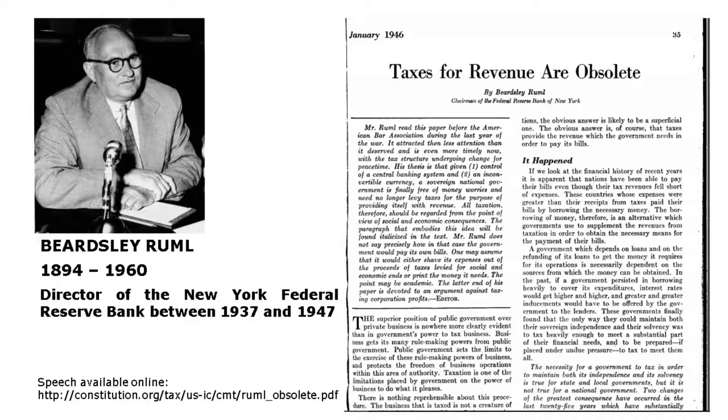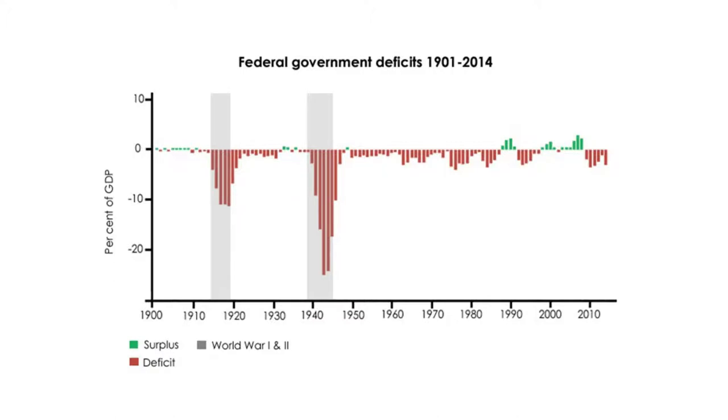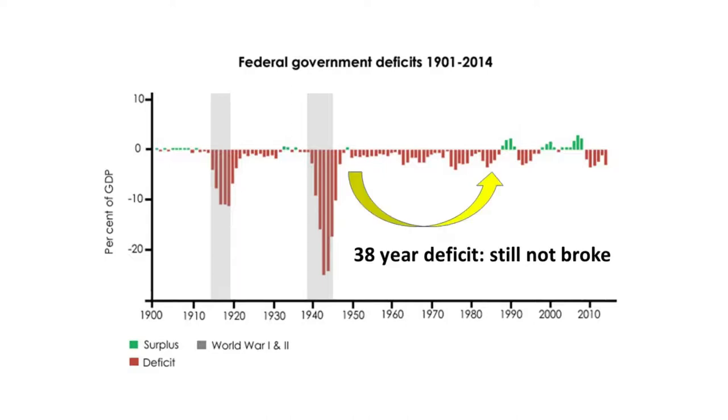The government-household budget analogy is completely fictitious and erroneous. Right now, Australia has about $286 billion in debt. That debt has not been paid off since 1911 — it is 107 years old. Can you get a mortgage for 110 years from your local bank? Between 1949 and 1987, Australia ran budget deficits for 38 consecutive years. You can't do that as an individual, because you use the currency. The Australian government can and did, because they issue the currency.